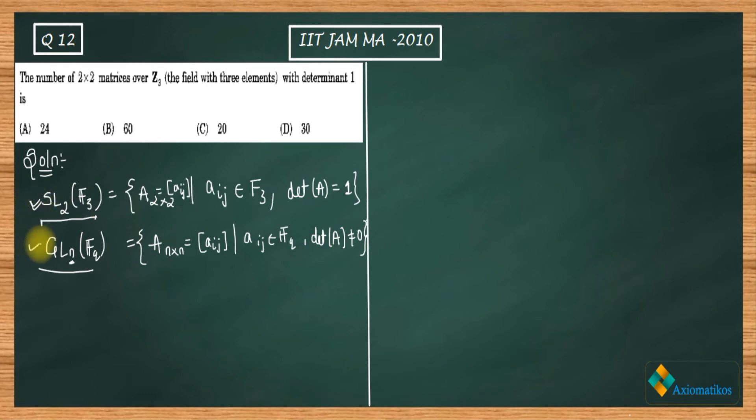This is general linear group, this is special linear group. This special linear group is actually a subset of this general linear group. And order of this SL₂(F₃) is defined like this: order of SL₂(F₃)...